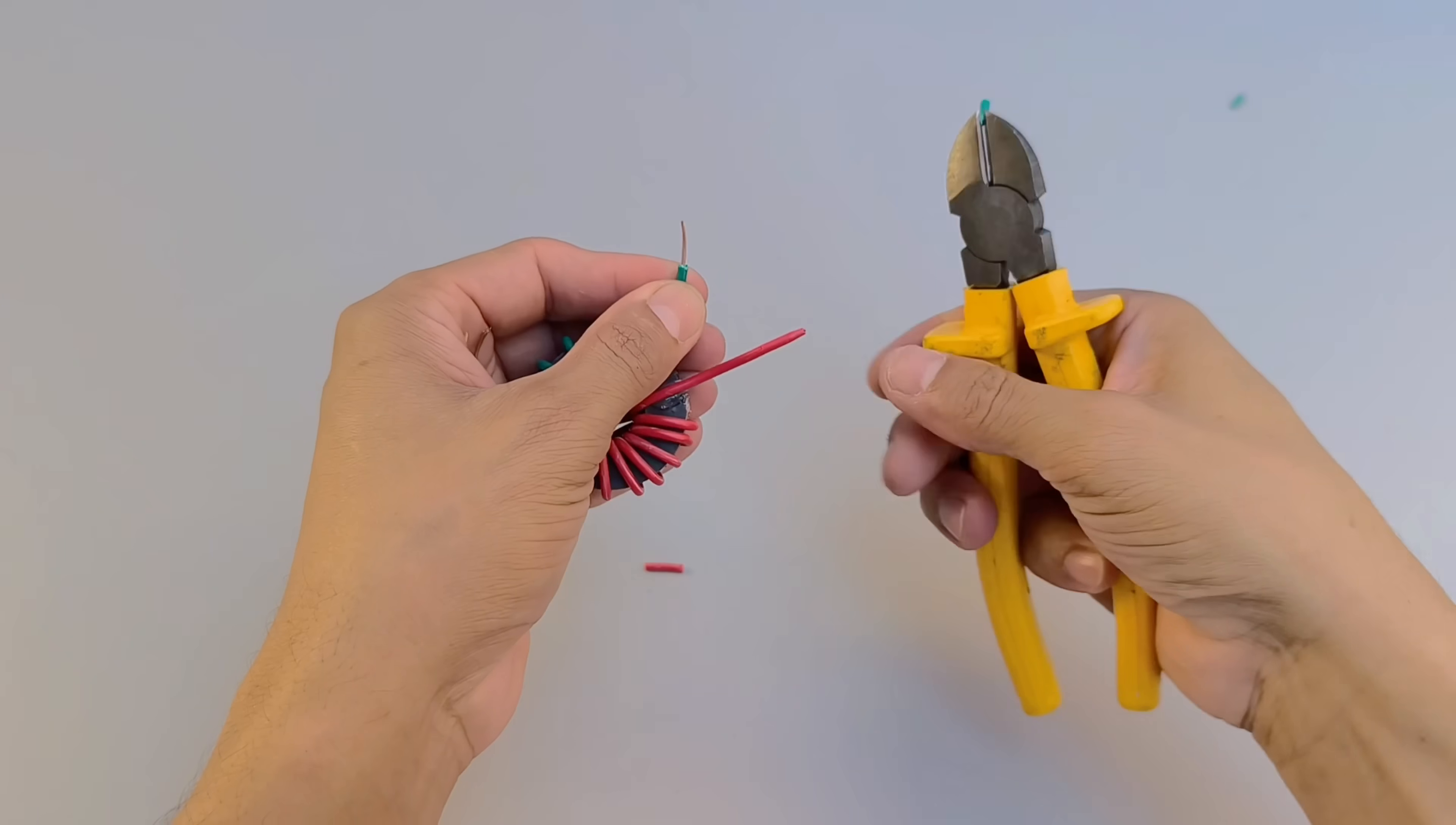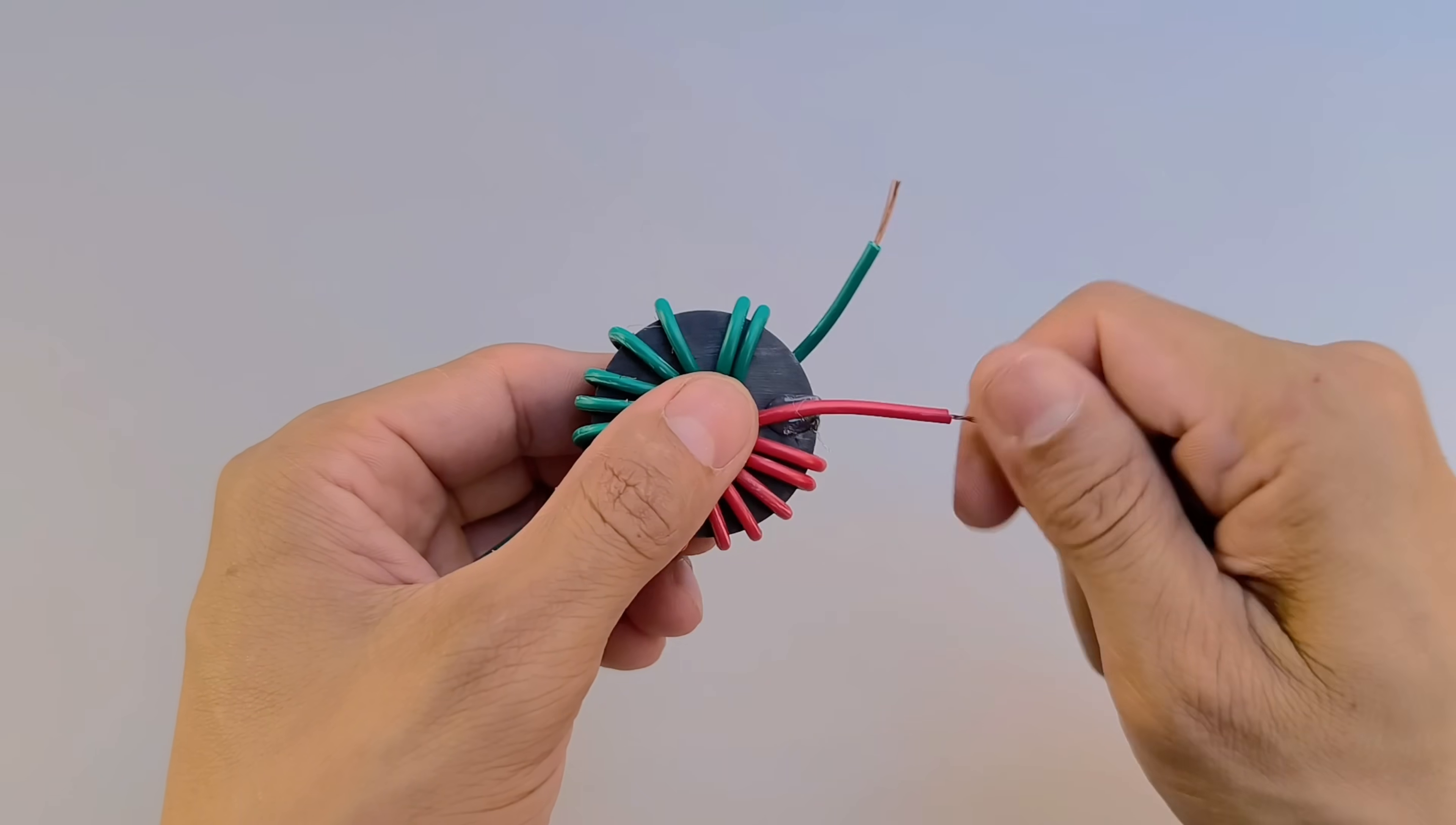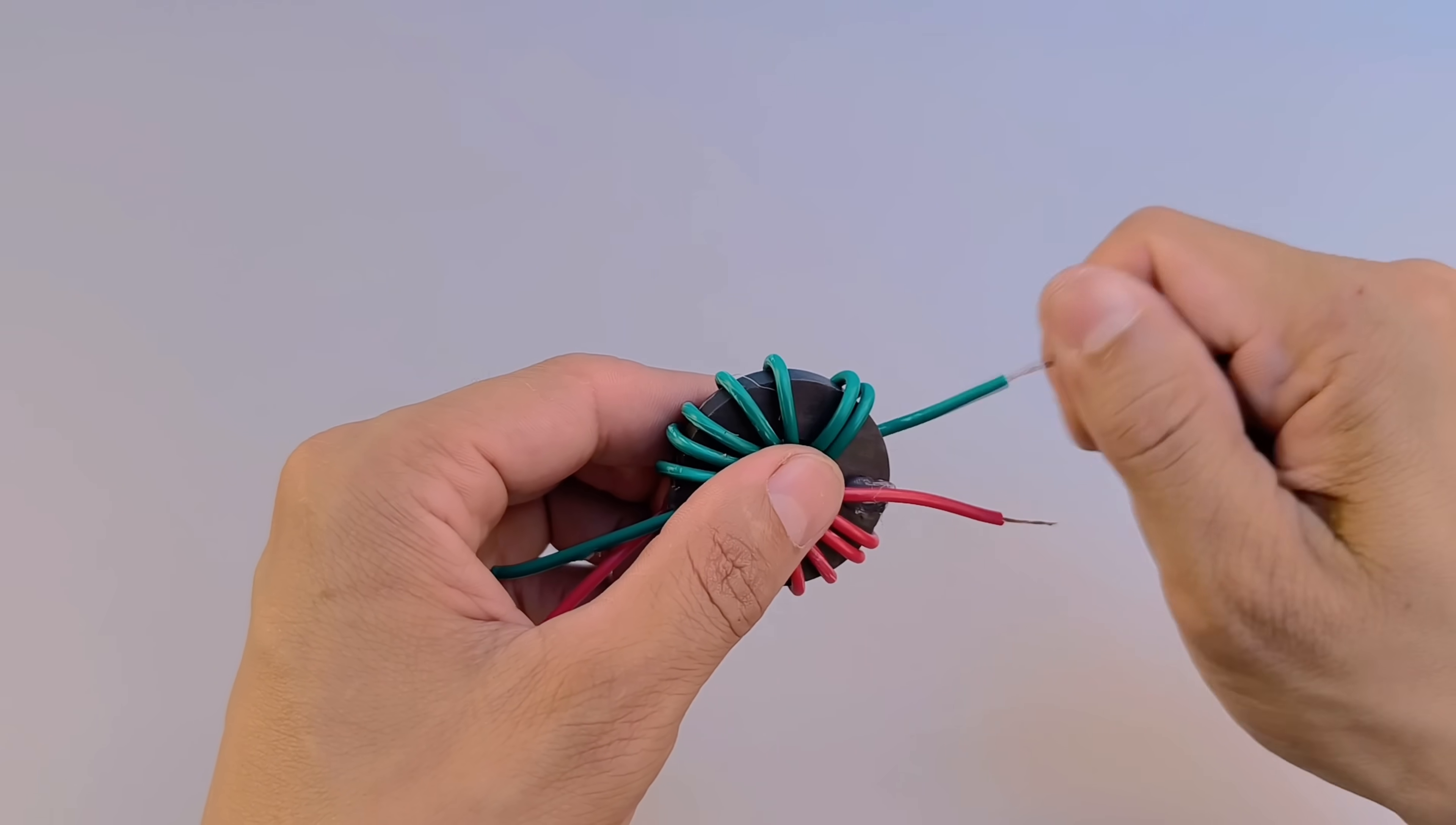Carefully remove the tip of each wire, exposing the copper inside. This is essential to ensure good electrical conduction and facilitate the soldering process later on.